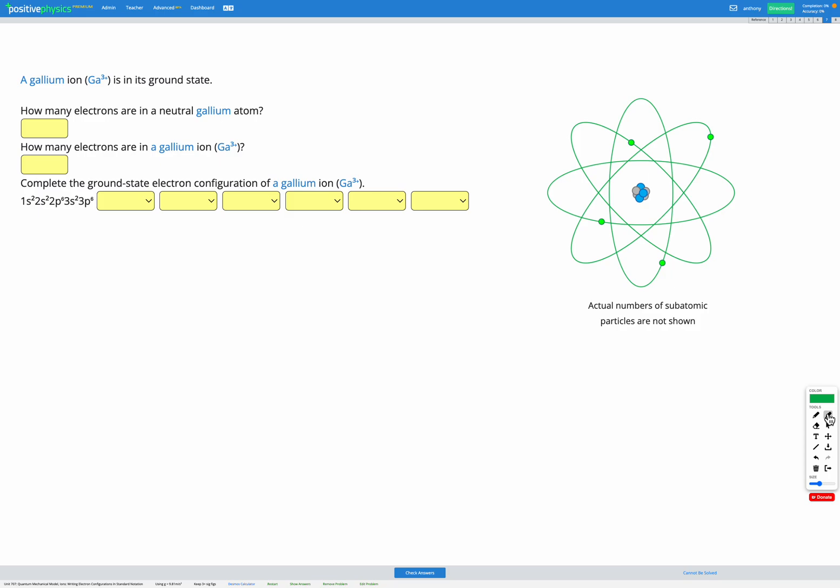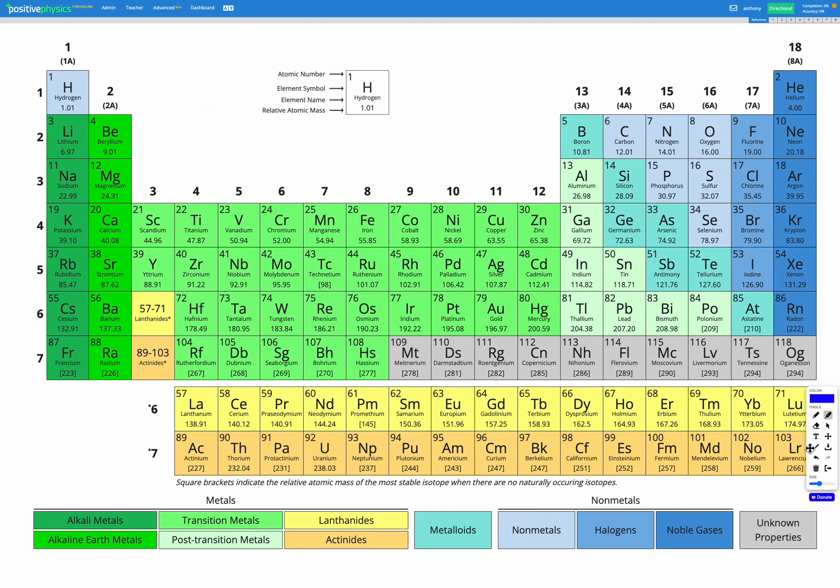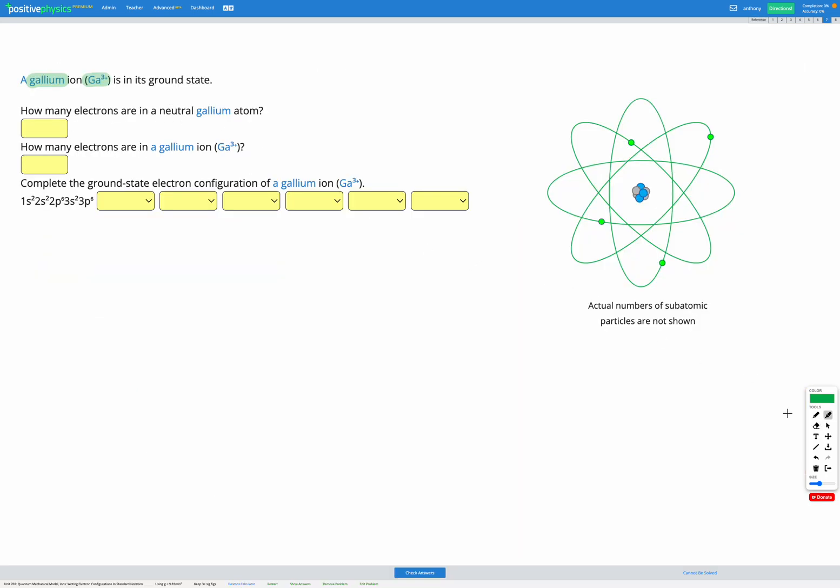In this question we have a gallium ion Ga³⁺ in its ground state. Our first goal is to figure out how many electrons are in a neutral gallium atom. Let's find gallium on the periodic table. It has atomic number 31, which means 31 protons. So in a neutral gallium atom we also have 31 electrons.